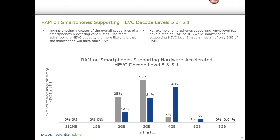Looking at other characteristics of devices supporting HEVC decoding can be useful for people building a platform — for example, storage capabilities and chipset. Starting with RAM: looking at level 5, the more advanced the HEVC decoding level, the more RAM you're going to get on a device. The median for level 5 is 3 gigabytes of RAM, and at level 5.1 the median shifts up to 4 gigabytes. We expect this to continue to grow as the capabilities of newer phones progress.